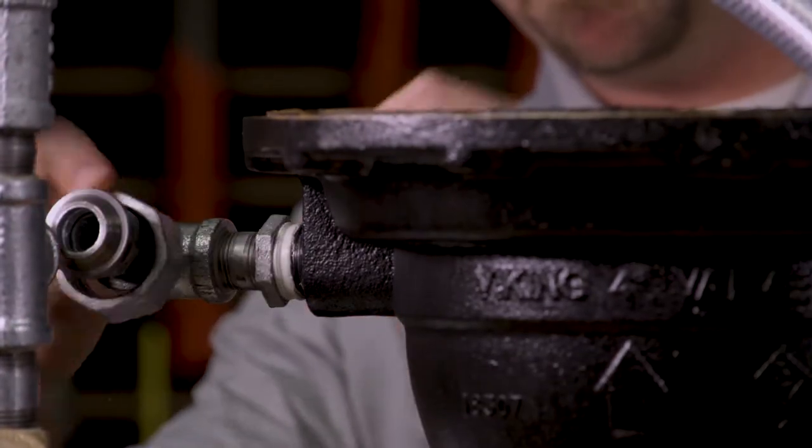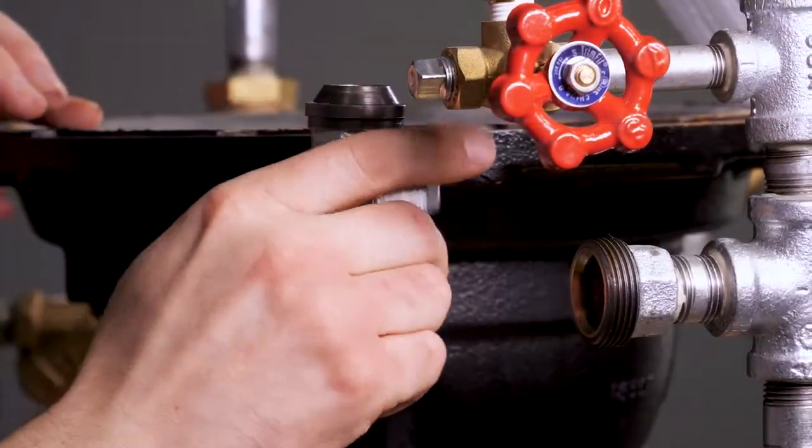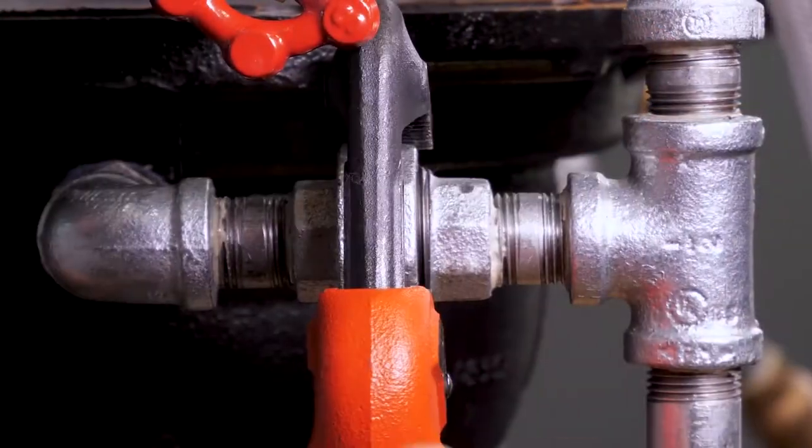We can replace the trim that we removed to expose the prime coupling back onto the body of the valve. We can now close the union on the trim.